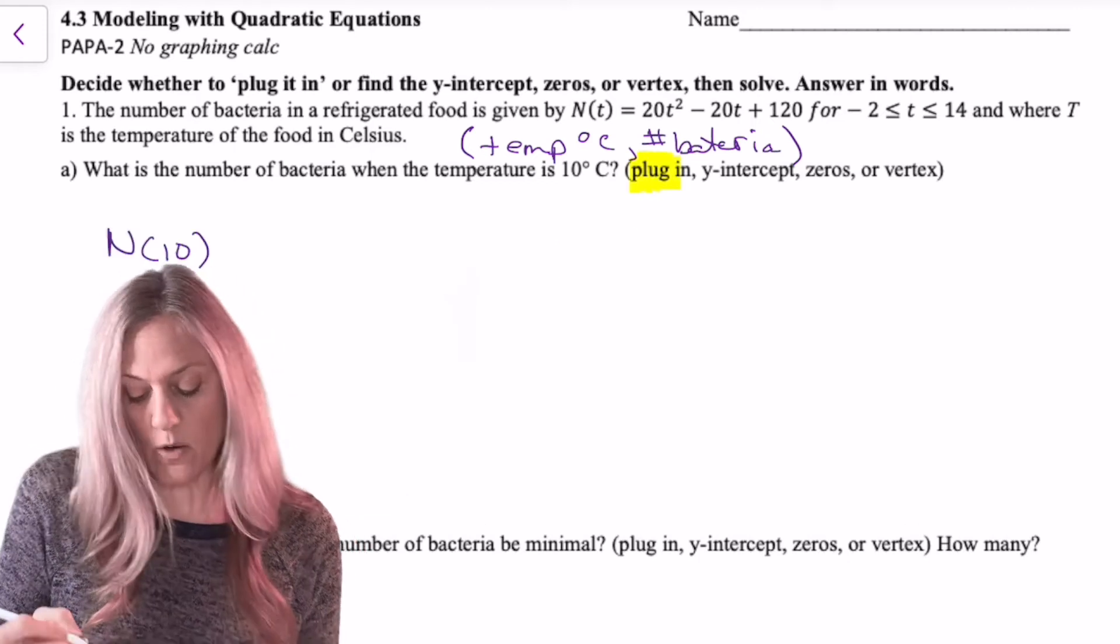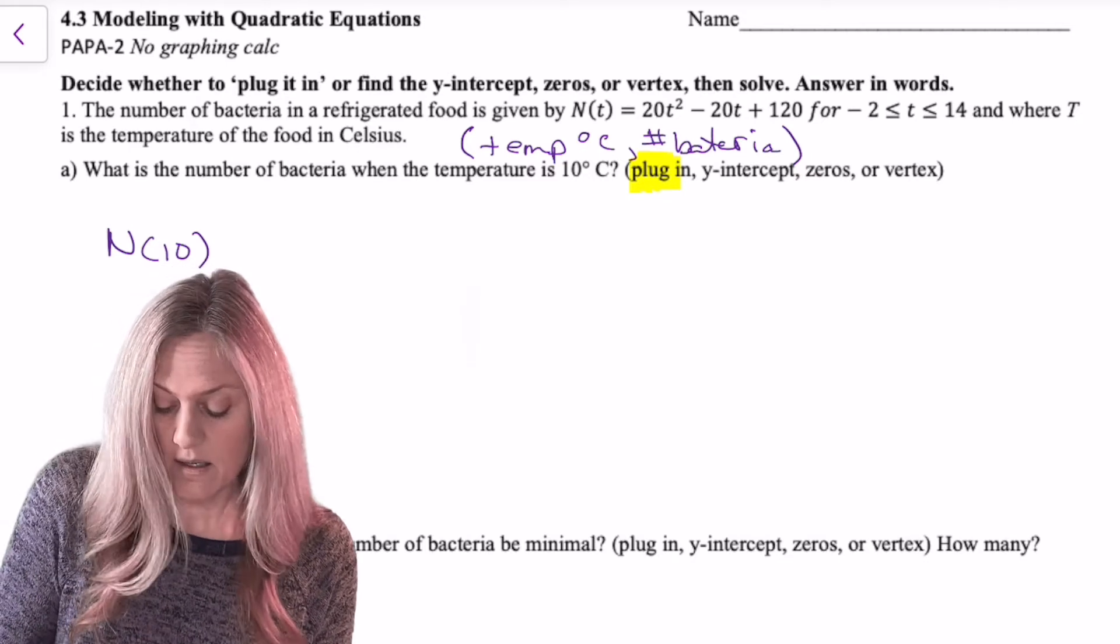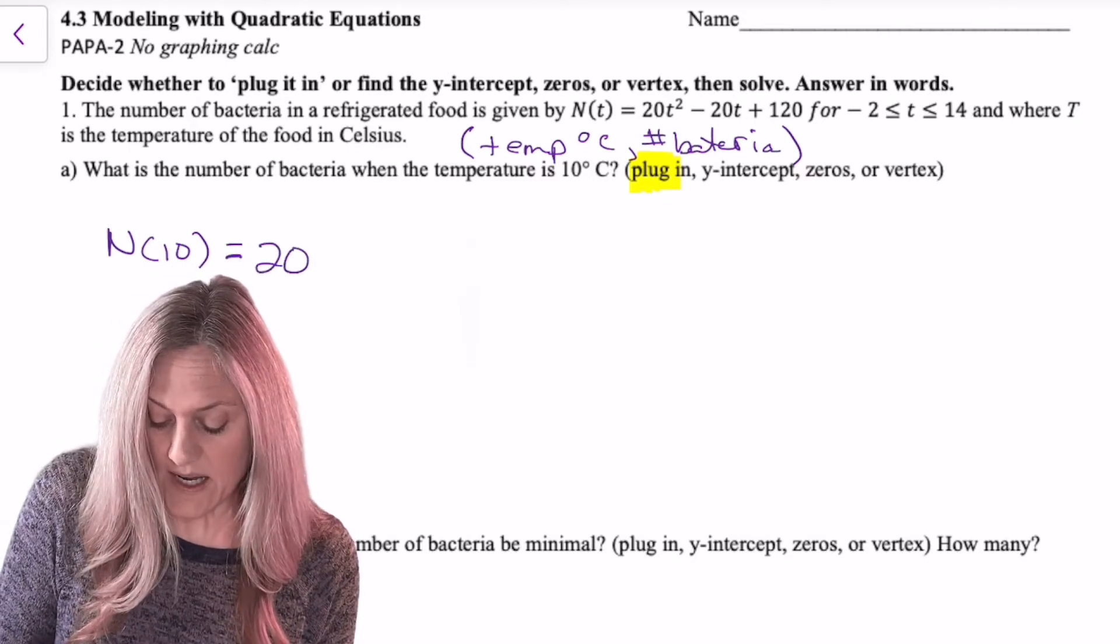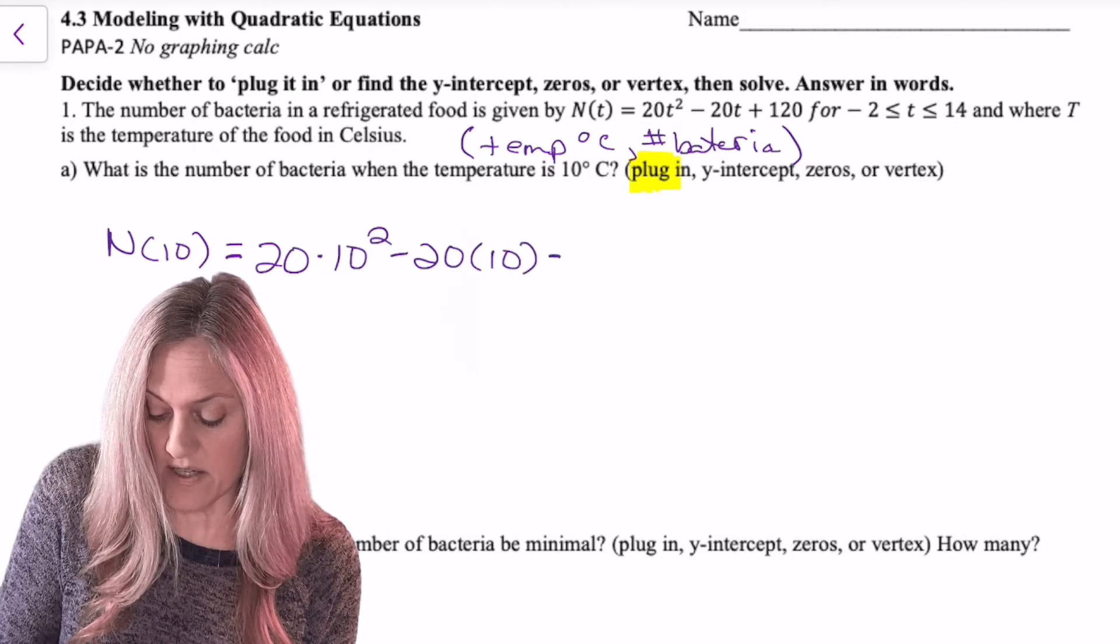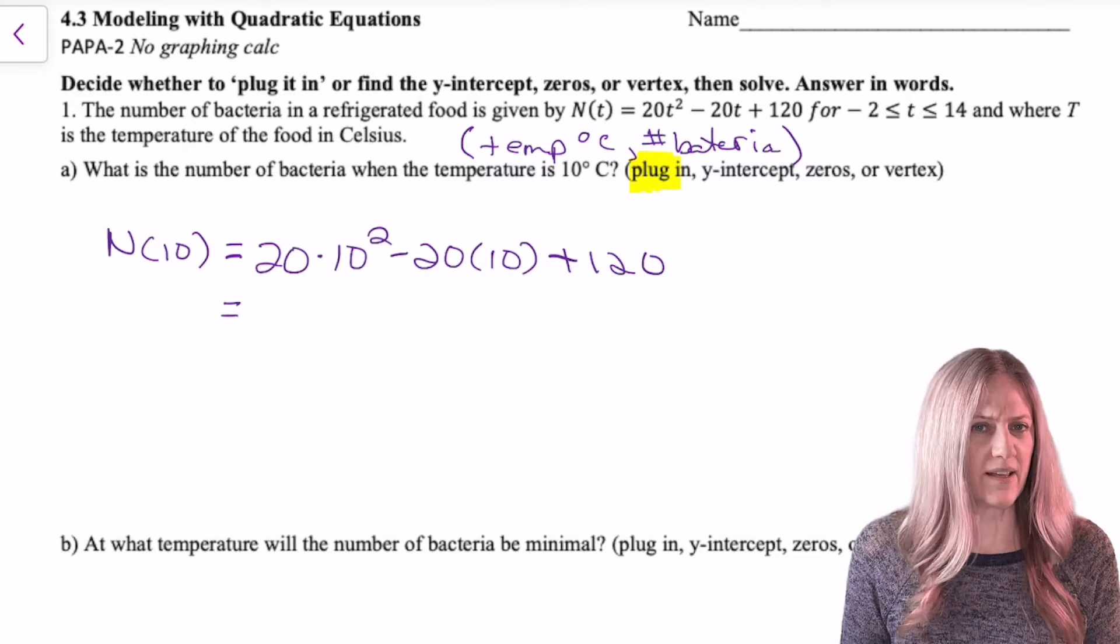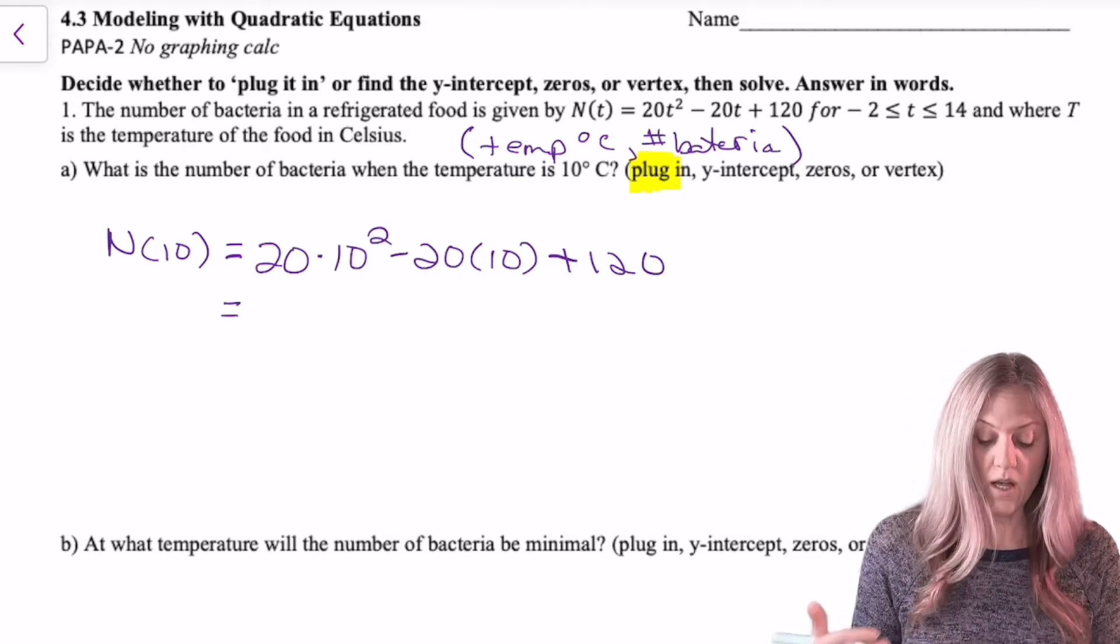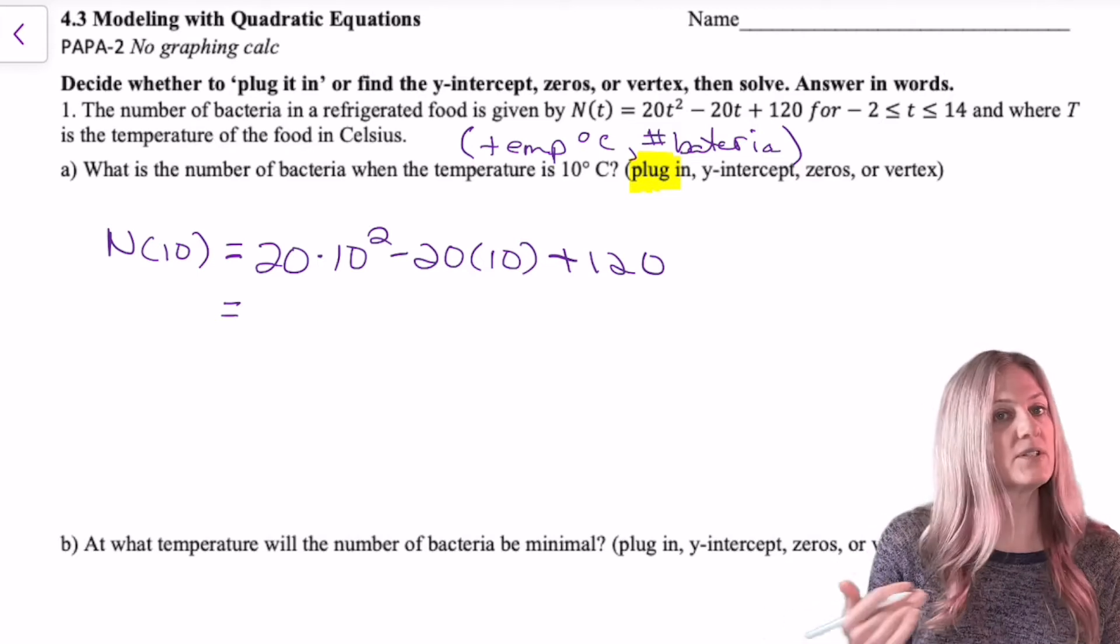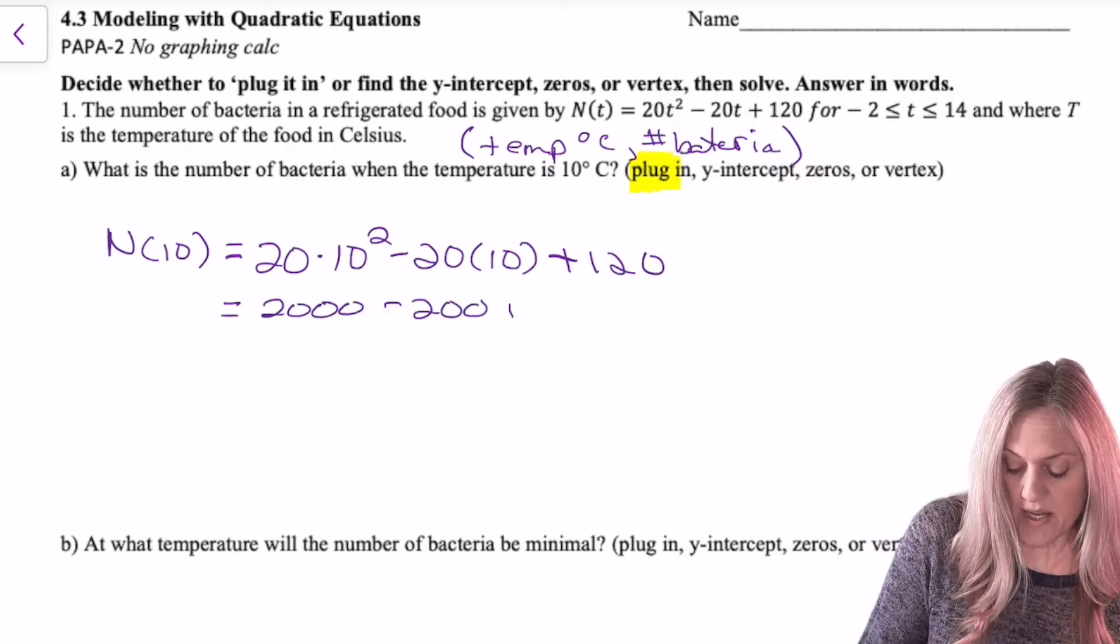Let's use correct notation. So n(t), because 10 is t, equals -20 times 10 squared minus 20 times 10 plus 120. So even though we might be tempted to use a calculator here, let's really work on our numeric skills. So 10 squared is 100, 100 times 20 is 2,000, minus 200 plus 120.